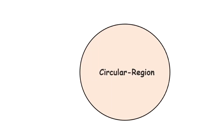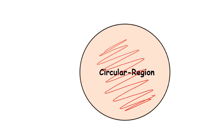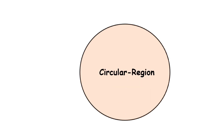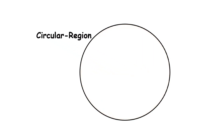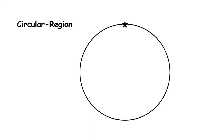Now here we have a circle and you can see the shaded portion. This shaded portion of the circle is called the circular region. The boundary of the circle is called the circumference of the circle.